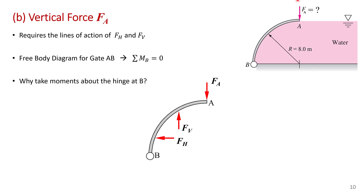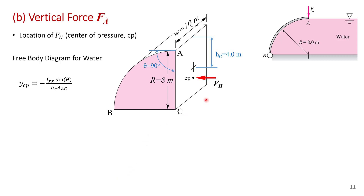Now we move on to part B: finding the force applied at A. This requires locating the lines of action of the vertical and horizontal forces. We know the magnitudes of FH and FV; we now need to find where they act on the gate. We'll then apply the condition for static equilibrium: the sum of moments about the hinge equals zero. We use the hinge to avoid calculating the hinge forces, which simplifies the problem.